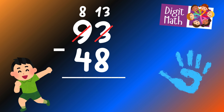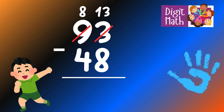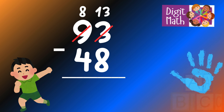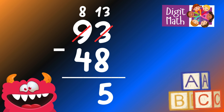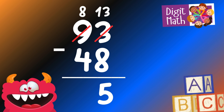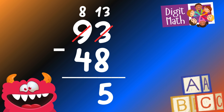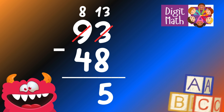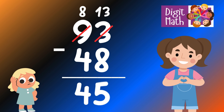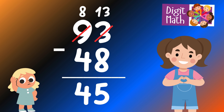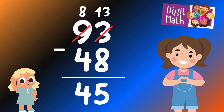Now we have 13 in the Units column. Subtract 8 from 13, which equals 5. In the Tens column, we now have 8. Subtract 4 from 8, which equals 4. So the final result is 93 minus 48 equals 45.